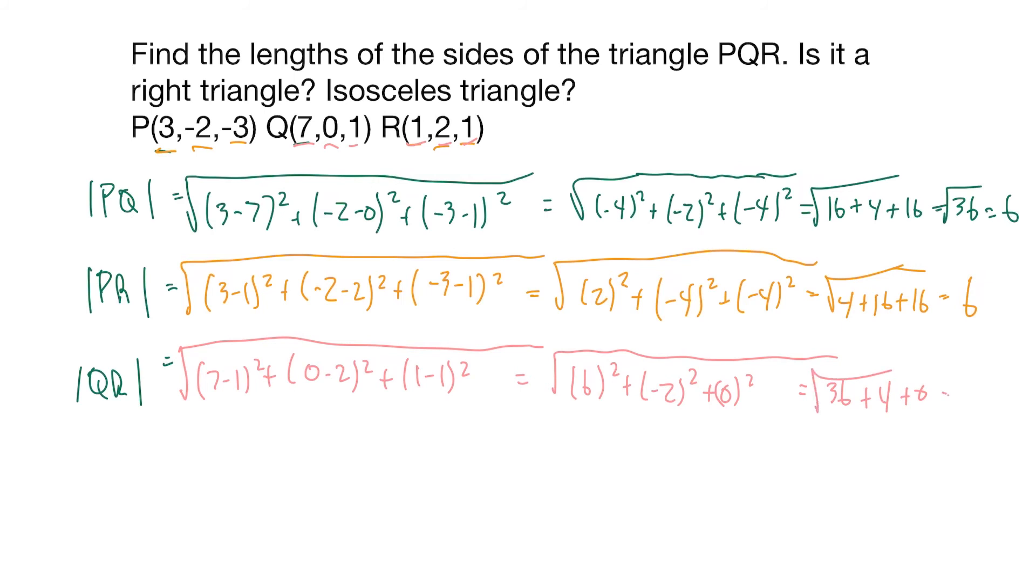And the square root of 40. Okay, so that's the lengths of our three sides of the triangle. And you can tell it's an isosceles because P, Q and P, R are the same length.